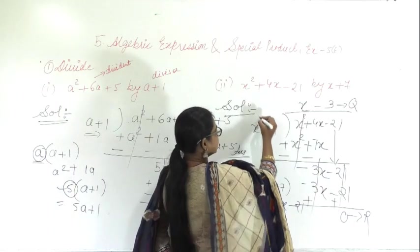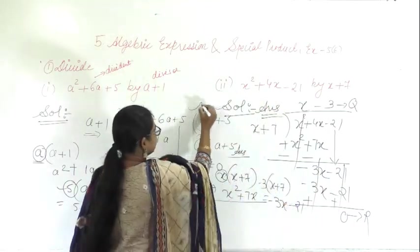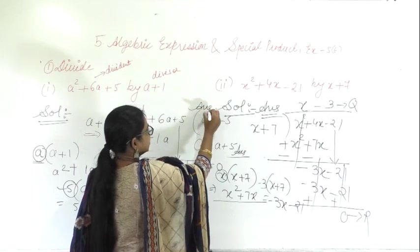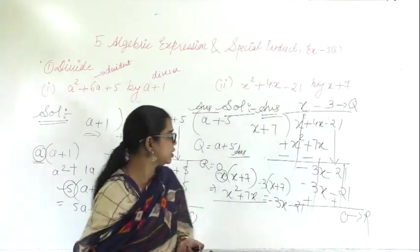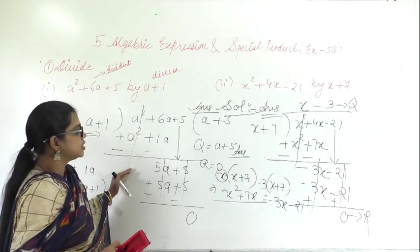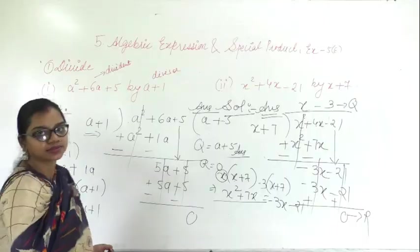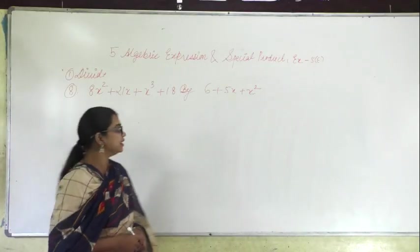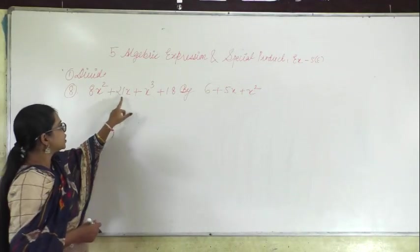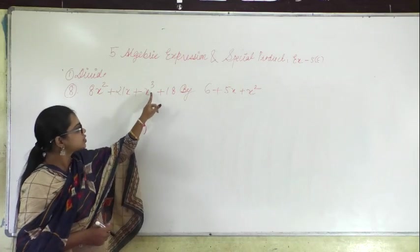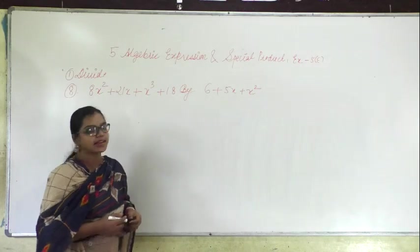So the quotient is x minus 3 and the remainder is 0. The answers are: first question a plus 5, second question x minus 3. I hope you are getting it — this is the easiest way I've explained. Question number 8 is given as 8x squared plus 21x plus x cubed plus 18 divided by 6 plus 5x plus x squared.